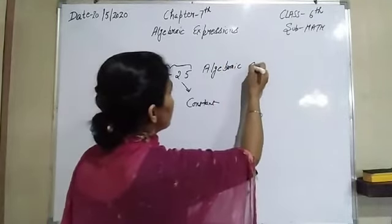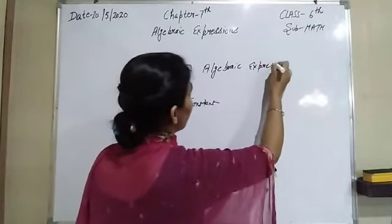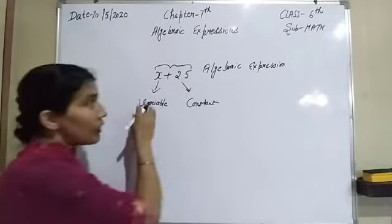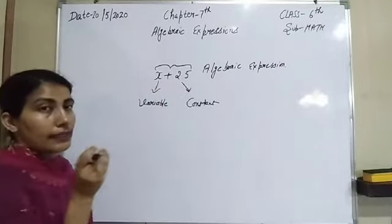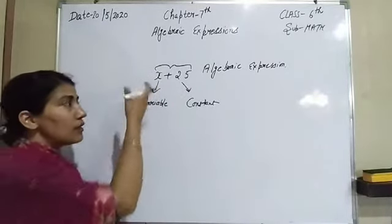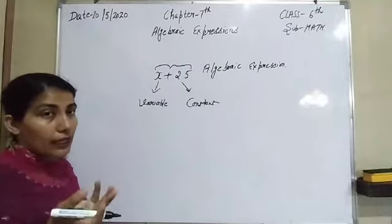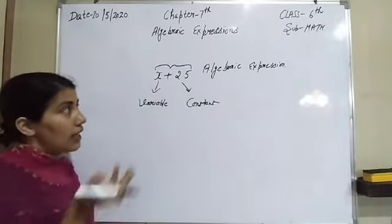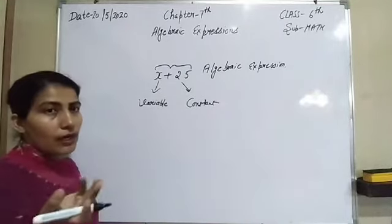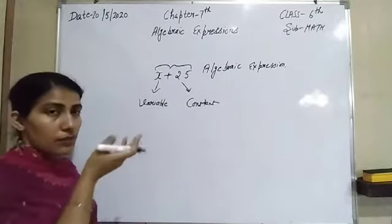An algebraic expression is the combination of variable and constant. Variables can be x, y, or z, and constant values can be positive or negative.